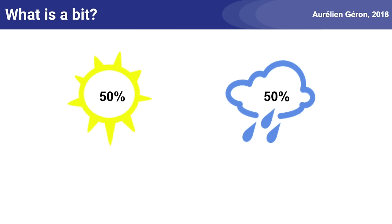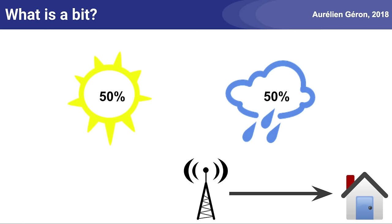For example, say that the weather is completely random, with a 50-50 chance of being either sunny or rainy every day. If a weather station tells you that it's going to be rainy tomorrow, then they have actually reduced your uncertainty by a factor of two. There were two equally likely options, now there's just one. So the weather channel actually sent you a single bit of useful information, and this is true no matter how they encoded this information.